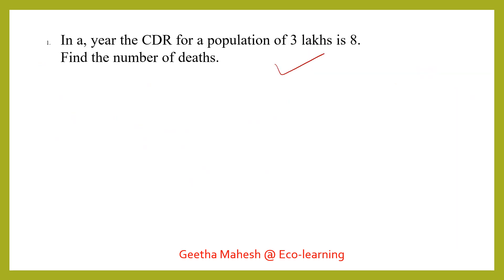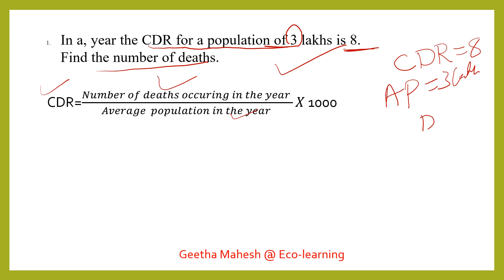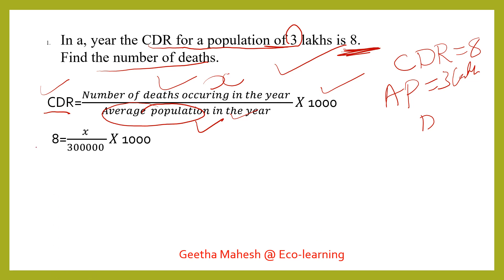Dear students, here is another problem. The crude death rate for a population of 3,00,000 is 8. We need to find the number of deaths. Using the formula, we substitute the crude death rate as 8 and the average population as 3,00,000, then solve for the number of deaths.